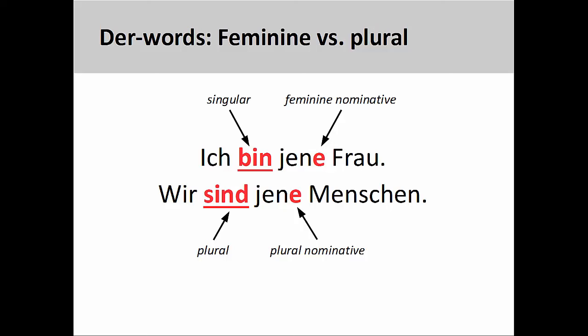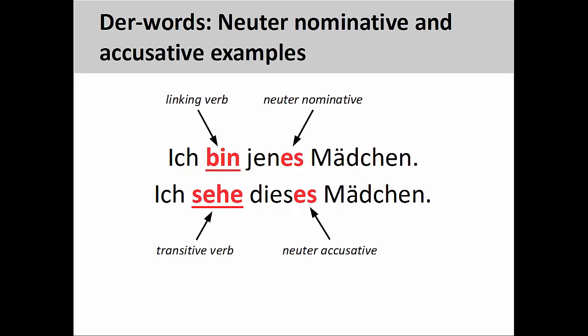It's important to pay attention to other details in the sentence to help distinguish between der-word endings. In the first sentence, the first person singular verb form bin helps me determine that the ending on the der-word must be feminine nominative. However, in the second sentence, the first person plural verb form sind tells me that the ending must be plural nominative. The same advice holds for neuter der-word endings. In the first sentence, the nominative personal pronoun ich, when used with the linking verb bin, suggests that Mädchen will be a predicate noun, which requires the der-word to take a nominative neuter ending. In the second sentence, however, Mädchen receives the action of the transitive verb, which requires the der-word to take an accusative neuter ending.